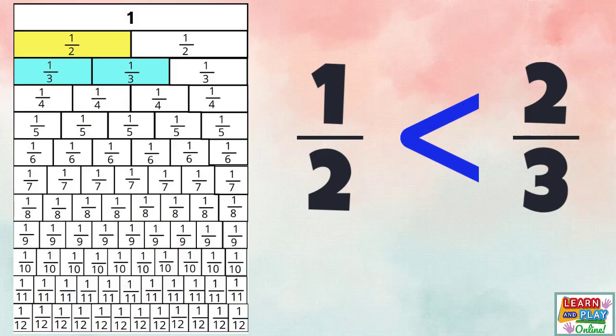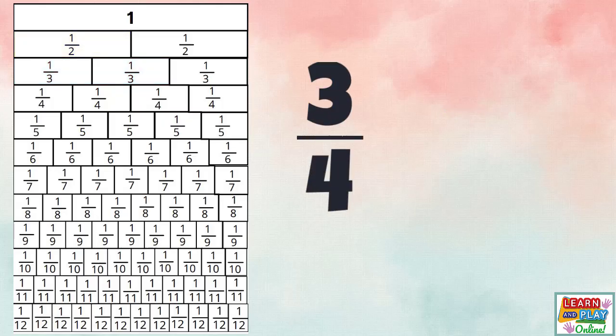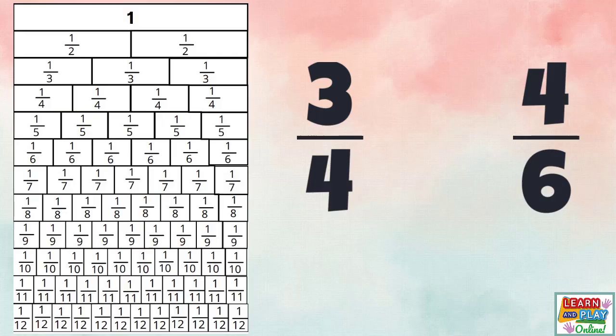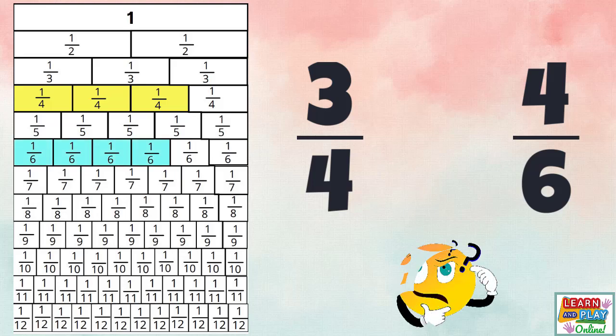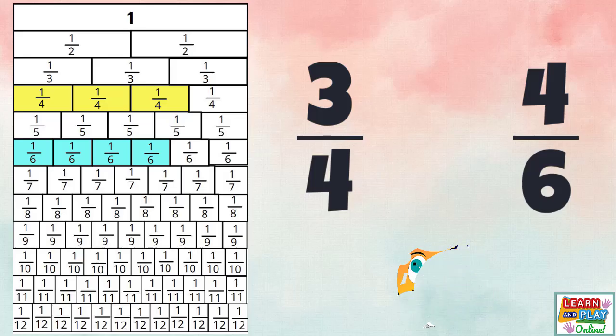Now let's compare three quarters with four sixths. First, we need to locate and highlight each of these fractions on the fraction wall. Here is three quarters, and here is four sixths. What do you notice? You can see from the highlighted sections that three quarters is larger than four sixths, so we use this mathematical symbol.